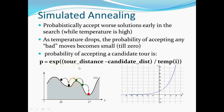The probability of accepting a candidate solution which is worse is determined by the temperature in this exponential function. If the candidate distance is larger we can still accept it because the result is negative. At high temperature, the probability of accepting a worse candidate solution is close to one, so we are more likely to accept it and climb out of the local minimum in order to reach the global optimum.